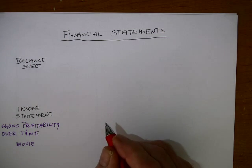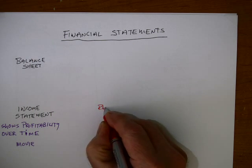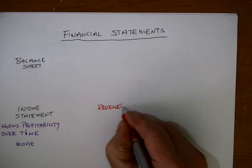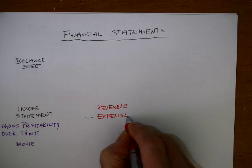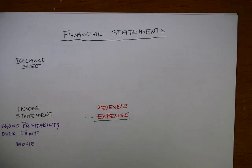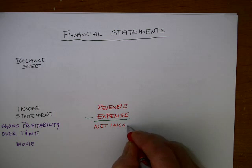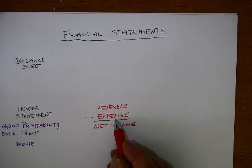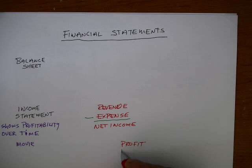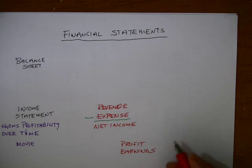The income statement consists of two of the five general categories of accounts. Revenue minus expense equals net income. Revenue represents what you earned in the business during your cycle, whether it's a day, a month, or a year. Expense is what you used up in order to earn that revenue, and what's left over is your net income. Another word for net income is profit, and sometimes earnings. I'm going to stick with the term net income because it's the more commonly used term in business today.